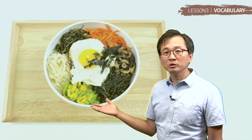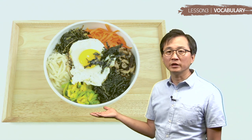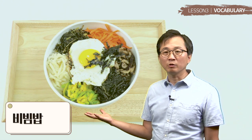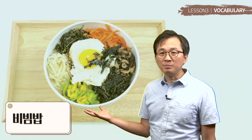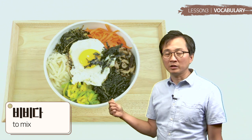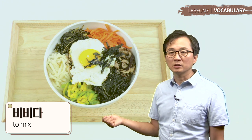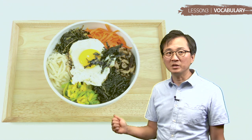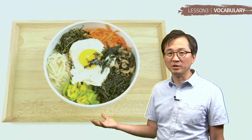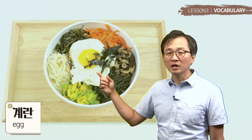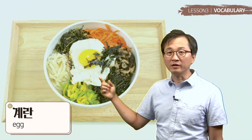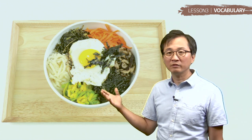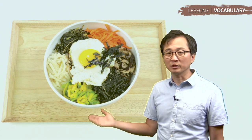자 여기 보시면 음식이 있어요. 무슨 음식이에요? 이거는 popular Korean dish 비빔밥 그러네요. 비비다 is a verb that means to mix. 비빔밥 literally means rice mixed with vegetables and beef. 여기 계란도 있네요. 계란 그러면 egg. 그 다음에 you can see some pan-fried vegetables here.